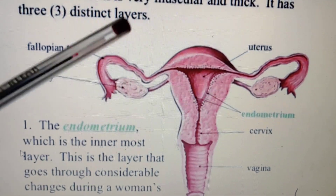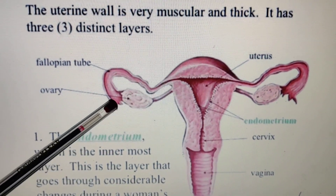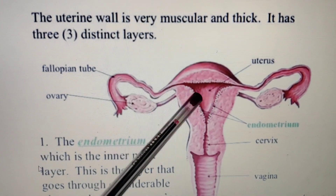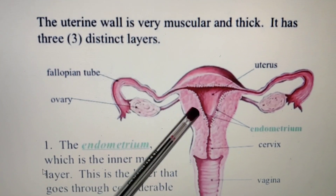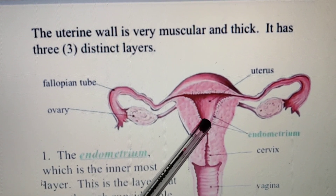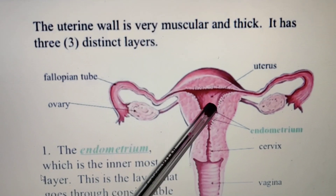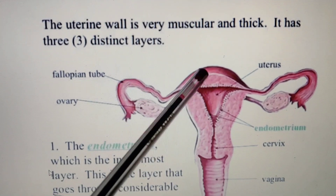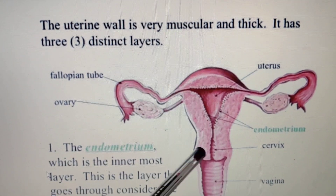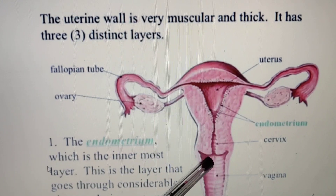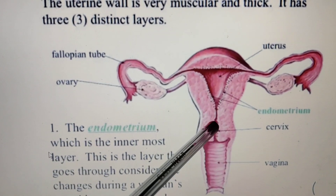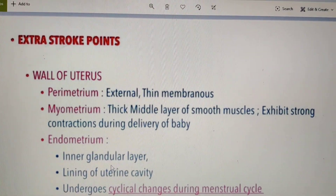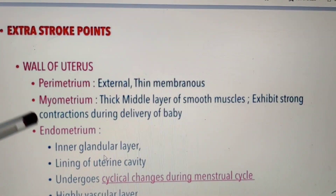This is another diagram. These are the ovaries; these are fimbriae which collect the secondary oocyte, and the fallopian tube opens into the uterus. The walls of the uterus: perimetrium, myometrium, and inner endometrium. Highly vascular. Fundic part, body part, and this is the cervix. The cervix opens into the vagina, which is a highly folded structure.